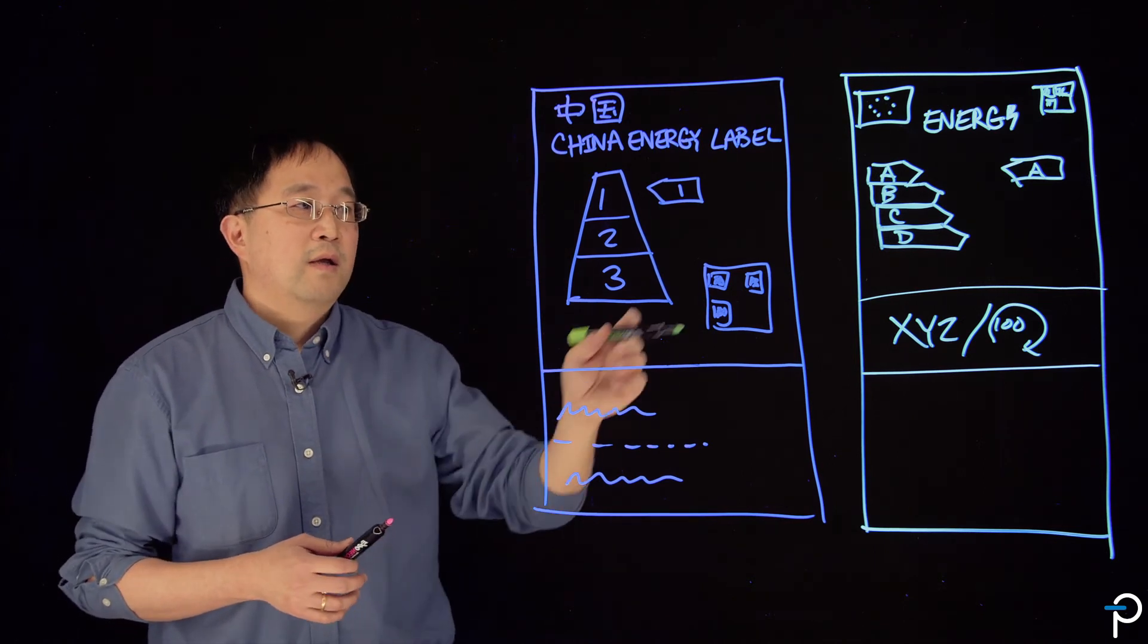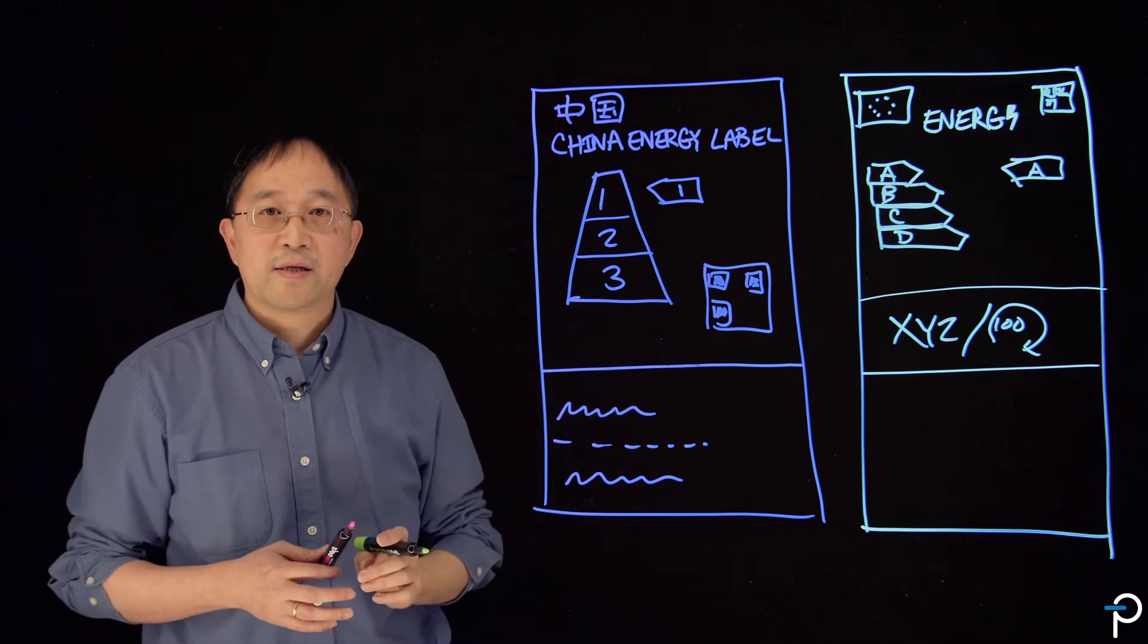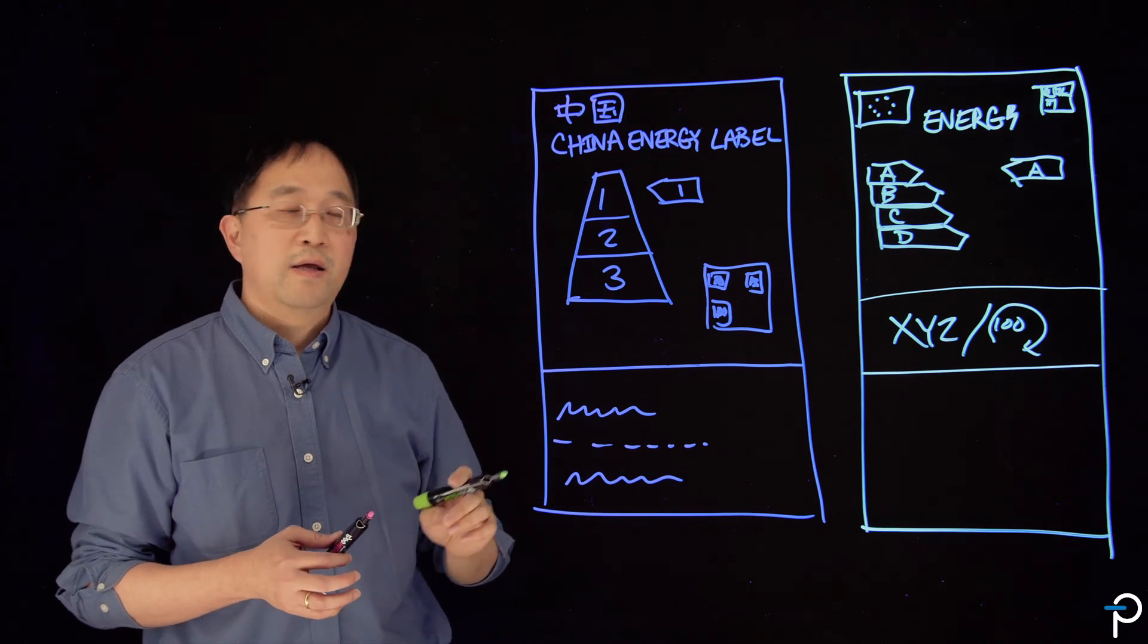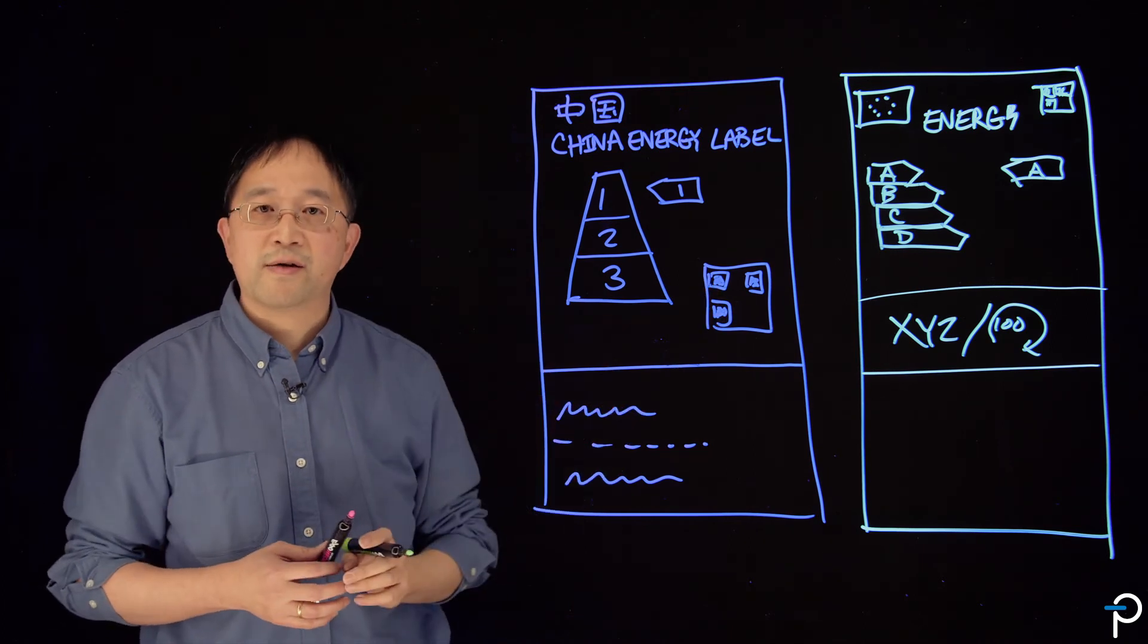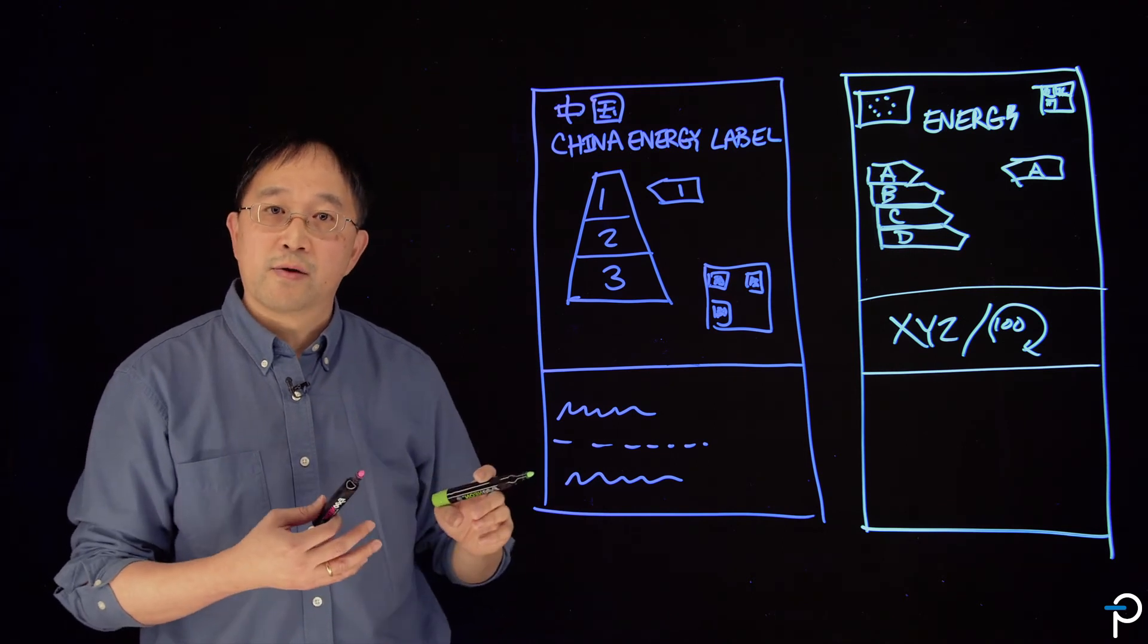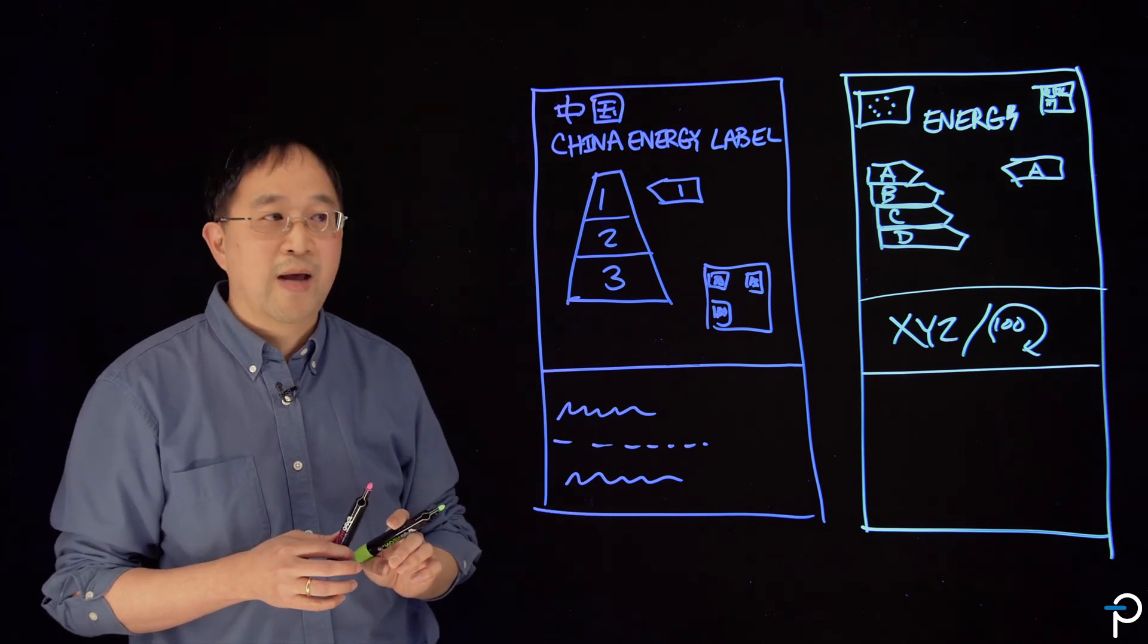So when the QR code is scanned for a product, it will have a link to a registry in Europe or in China, respectively, that has additional product information and some sort of declaration that the performance requirements for the label are indeed met.